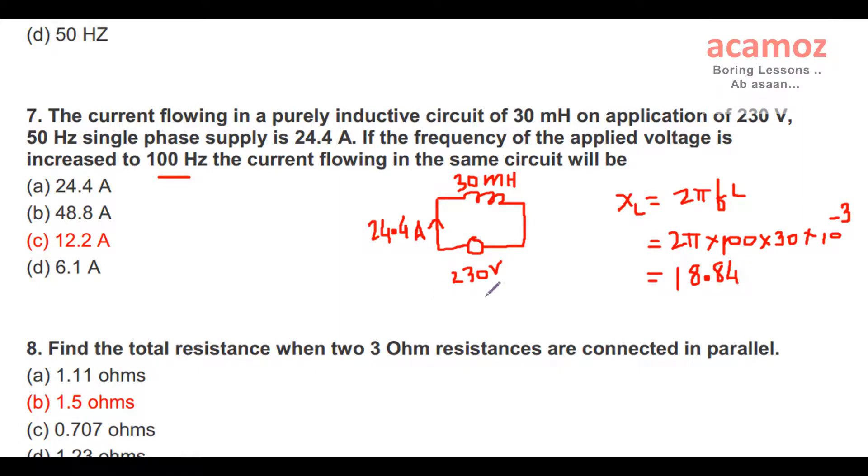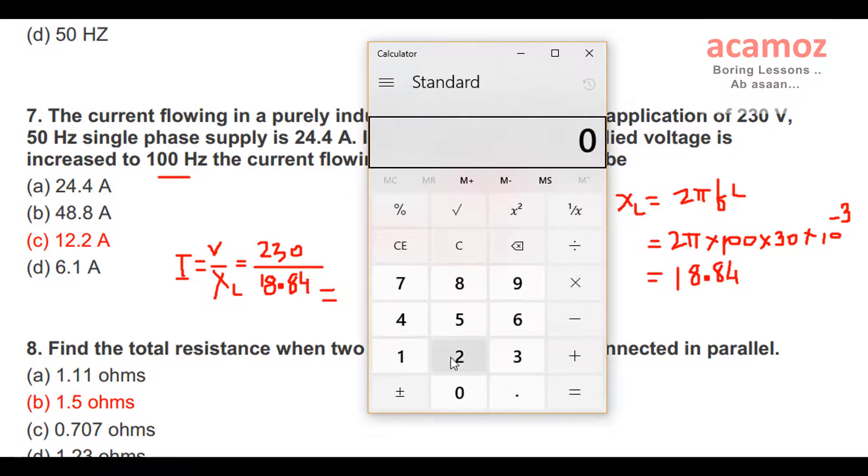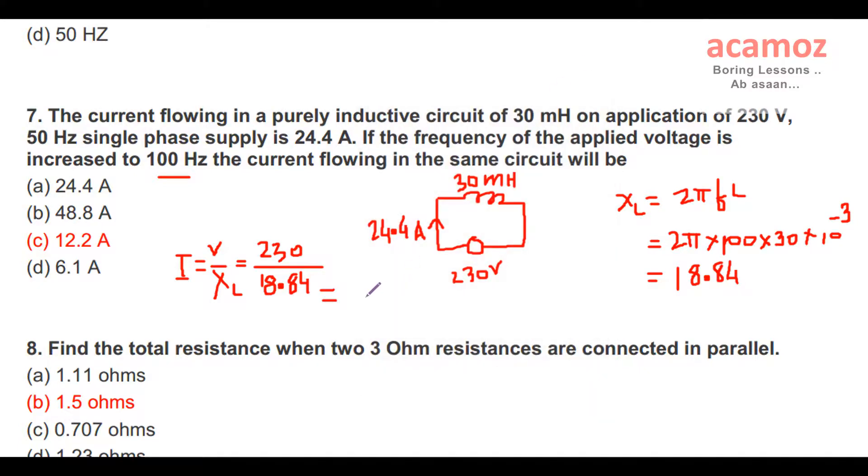Now you have to find the current. So I is equal to V by XL. V by XL, and V equals 230 divided by 18.84. Then the answer is, if we calculate this value, 230 divided by 18.84, the answer is 12.2. The answer is 12.2 ampere current. That means if we increase the frequency, then current decreases.